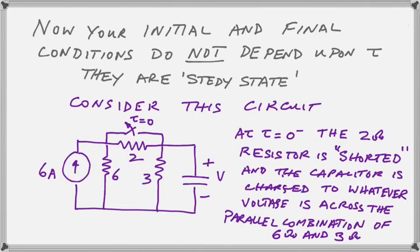So we are now going to consider a circuit where you can see that the switch opens and closes a short across the 2 ohm resistor. The arrow indicates that at T equals 0 we open the switch. So when we write T equals 0 with an arrow like that it means that at T equals 0 minus the switch is closed and at T equals 0 plus the switch is open.